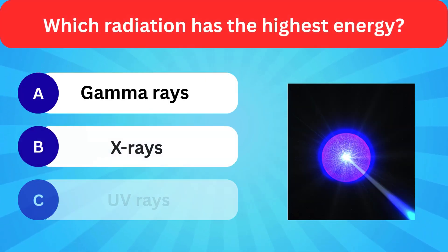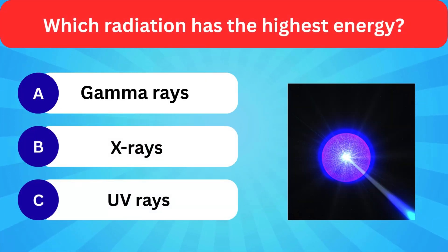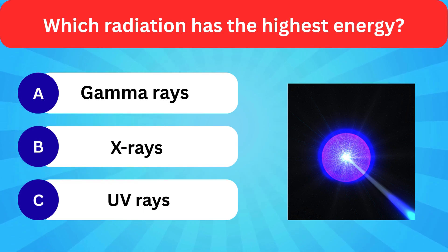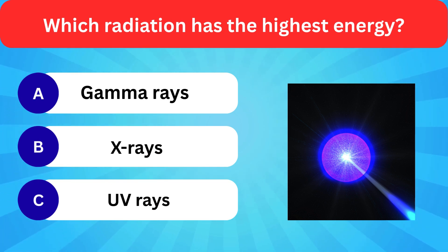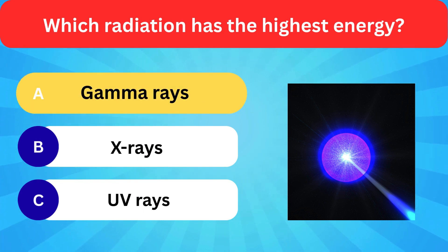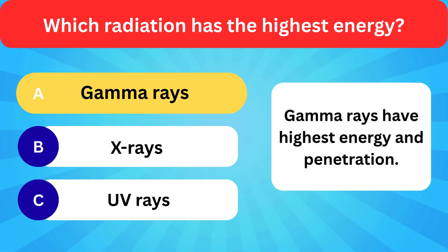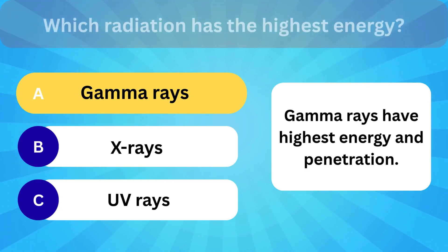Which radiation has the highest energy? Options: Gamma rays, X-rays, UV rays. Correct answer is gamma rays. Gamma rays have the highest energy and penetration.